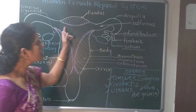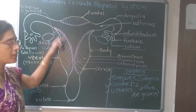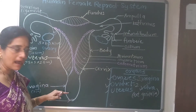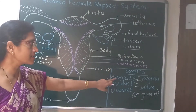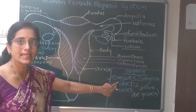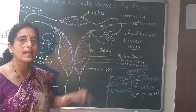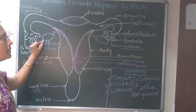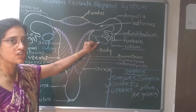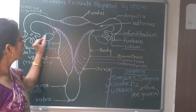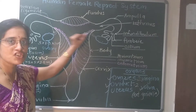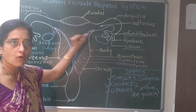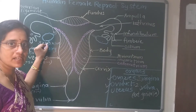The organs of the female reproductive system: first is ovaries — a pair of ovaries. You can see here the blue color structure. They are almond-shaped, oval, almond shape.